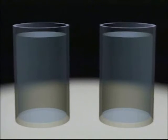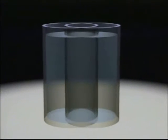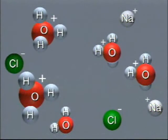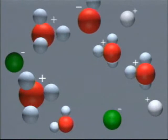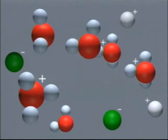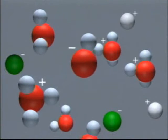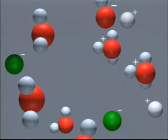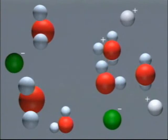When these two solutions combine, a neutralization reaction takes place. In this reaction, hydrogen ions from the acid and hydroxide ions from the base combine to form water molecules. The sodium and chloride ions are unaffected and remain to form a neutral sodium chloride solution.